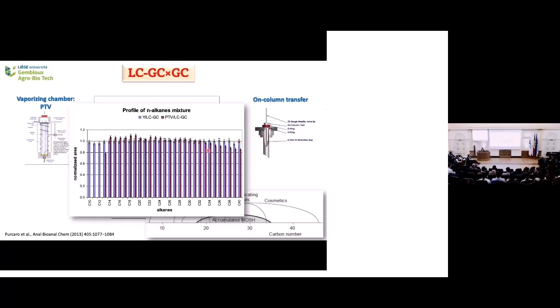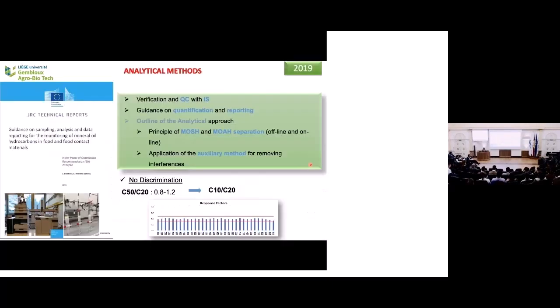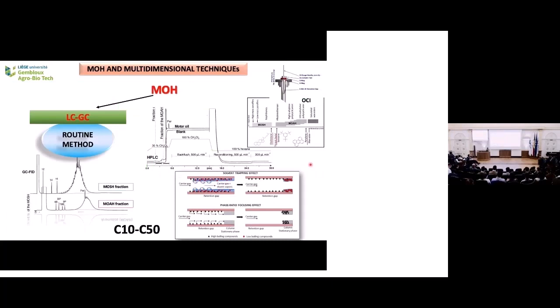Since then, all the requirements in the characterization of mineral oil contamination has changed. Now we are required to characterize between C10 to C50. In this case, the PTB interface actually failed because it's very difficult to optimize it without having any discrimination of the fraction that we are transferring. Beyond C35, we start to have a decrease of concentration of our compounds. So we need to go back to the on-column interface to meet the requirements of the European Union, the opinion of EFSA and the JRC guidance.